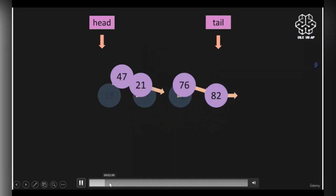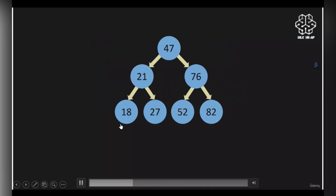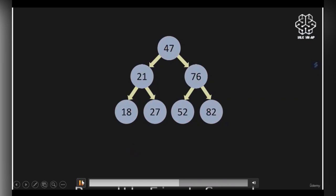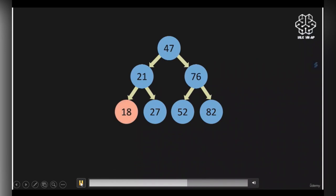Let us have an introduction to tree traversal. If you want to carry out iteration on a linked list, the time complexity would be high — that's the reason why we arrange our nodes in trees. In breadth first search, we go through all elements level by level. First you return 47, then 21 and 76, then 18, 27, 52, 82 in this specific order.